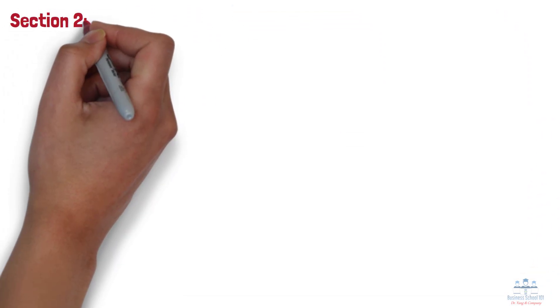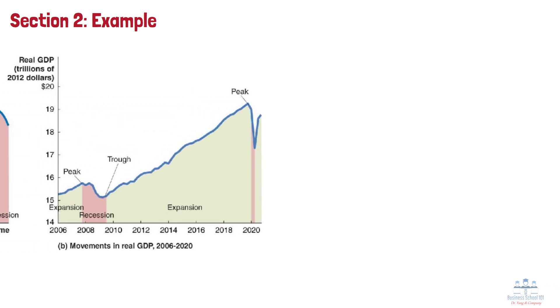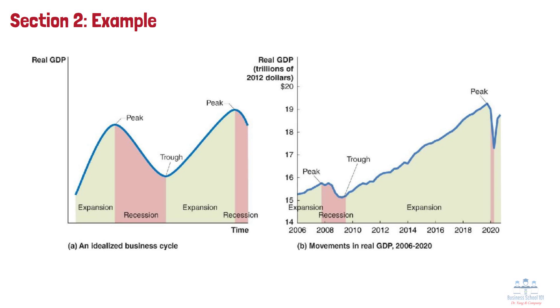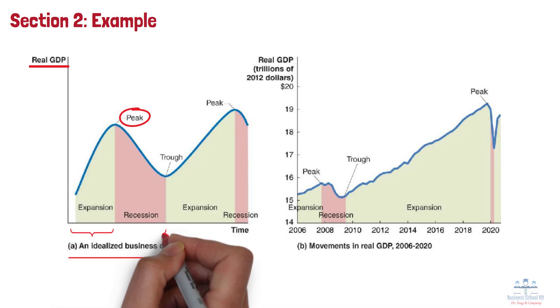Section 2: Example. Let me show you something fascinating. Look at this chart showing the phases of the business cycle. See those ups and downs? That's our economy in action. Number 1: The left panel shows an idealized business cycle, with real GDP increasing smoothly in an expansion to a business cycle peak and then decreasing smoothly in a recession to a business cycle trough, which is followed by another expansion and another recession.